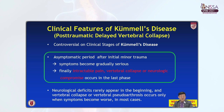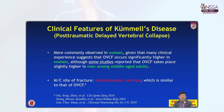First, there is an asymptomatic period after initial minor trauma. Then symptoms become gradually serious. Finally, intractable pain, vertebral body collapse, or neurologic compromise occurs in the last phase. Kummel disease is observed more commonly in women, as osteoporotic vertebral compression fractures occur significantly higher in women, although some studies report higher incidence in men among middle-aged patients. The most common site of fracture in Kummel disease is the thoracolumbar junction.